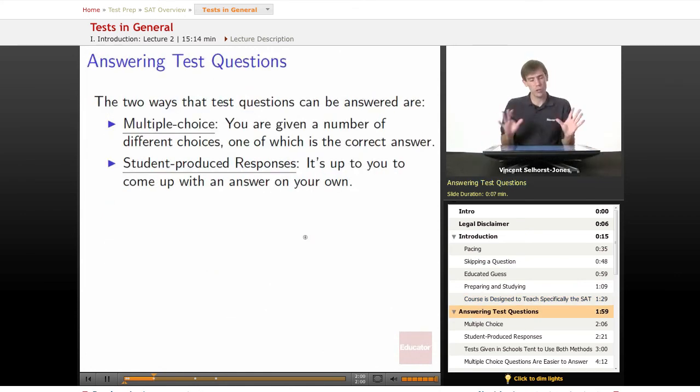In general, I'm sure you already know this, but there are two ways a test question can be answered. First, multiple choice. They're going to give you a selection of choices—like A, B, C, D, E, as they do in the SAT. They'll give you some number of choices, and it's up to you to choose from those choices the correct answer. You look at them and decide which one answers the question.